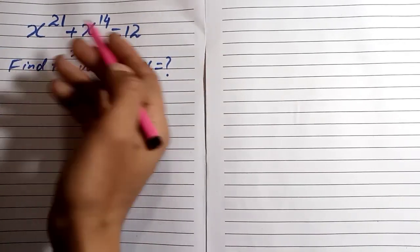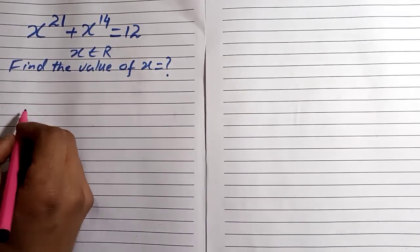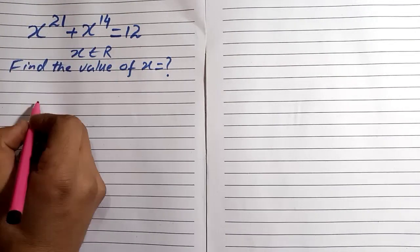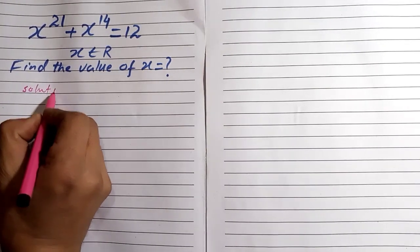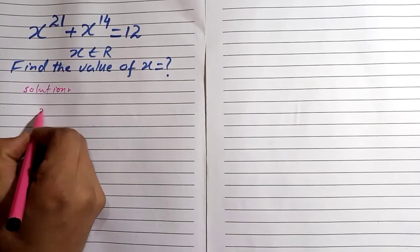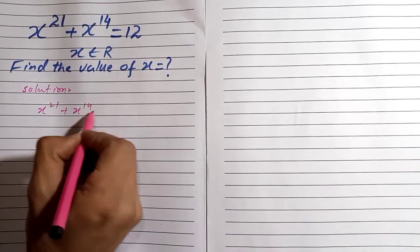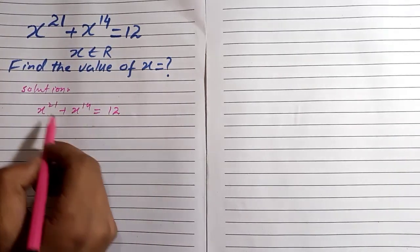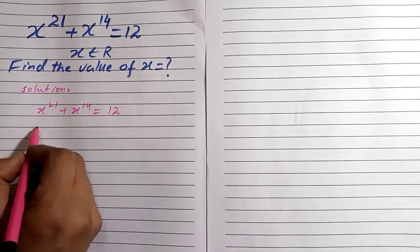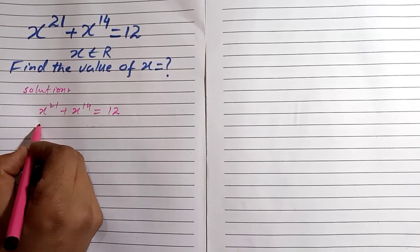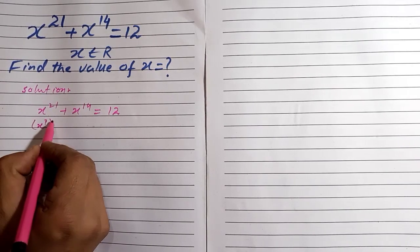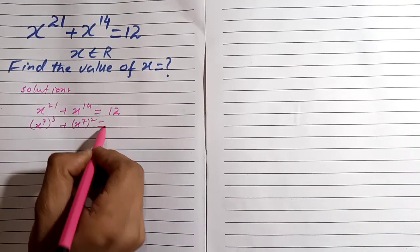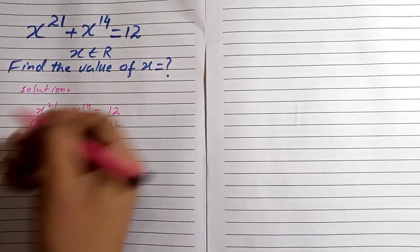For that, we first write x^21 in factor form. So in this equation we have x^21 plus x^14 which is equal to 12. We write these terms in their factor form: x^7 power 3 plus x^7 power 2, which is equal to 12.